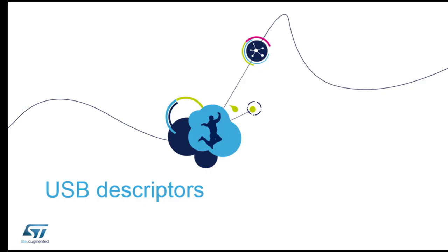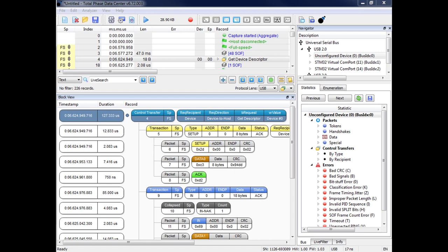Now we switch to USB descriptors. I propose to show you again the traces we have seen before together, just to have a look at them — maybe you will better understand them now. Here it's typically a get descriptors. We will explain what get descriptors means and things like that.